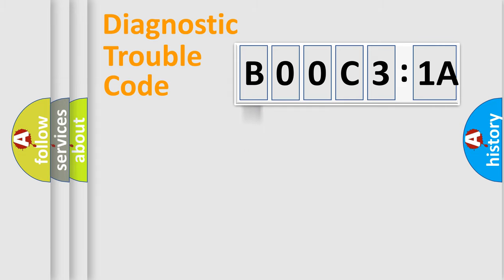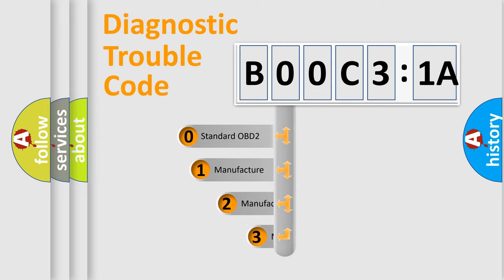Powertrain, Body, Chassis, and Network. This distribution is defined in the first character code.